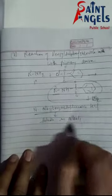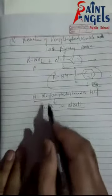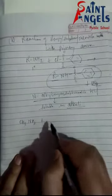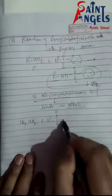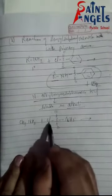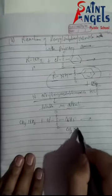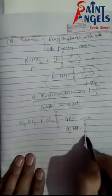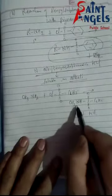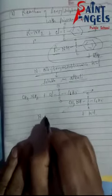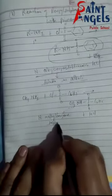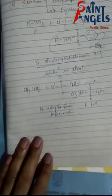For example, if we react methylamine (CH₃NH₂) with benzene sulfonyl chloride, the H and Cl are eliminated. The product formed is CH₃NH–SO₂–C₆H₅, plus HCl as a byproduct. The naming of this compound: since methyl is attached to N, it is called N-methyl benzene sulfonamide.